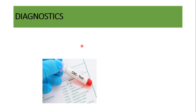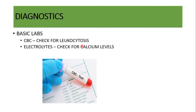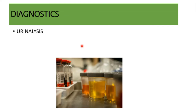For diagnostics, start with basic labs: CBC and electrolytes. CBC is mainly to check the WBC count — if there is high WBC or leukocytosis above 15,000 that would point to a UTI. Check electrolytes such as calcium levels; if calcium is high or low you may also do parathyroid tests. Then do urinalysis to check the pH — if the urine pH is alkaline, above 7, these patients are usually formers of struvite stones.